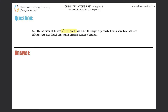We have sulfur 2 minus (S²⁻), chlorine minus one (Cl⁻) — if you see a negative or positive by itself it's always assumed to be plus or minus 1 — and then potassium which is plus 1. They're all going to have the same number of electrons.